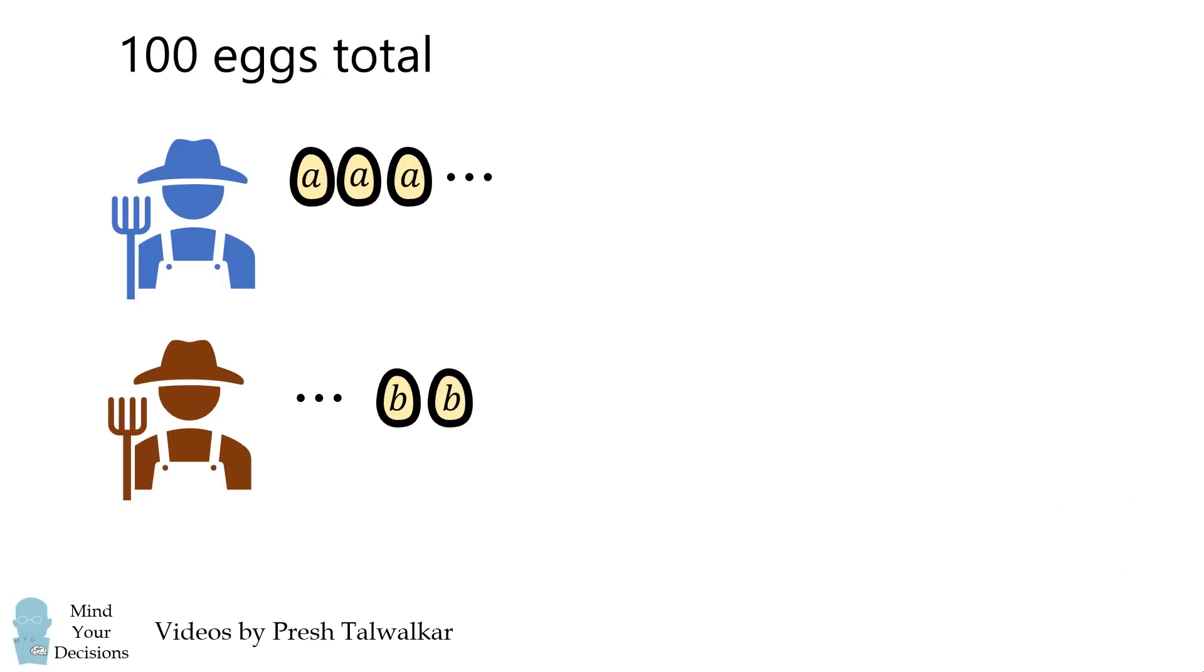We will first translate the word problem into algebraic symbols. Suppose the first farmer had x eggs. Since there are 100 eggs in total, that means the second farmer would have 100 minus x eggs. The amount of money the first farmer would get is equal to the number of eggs x multiplied by the price a per egg. This is equal to a times x.